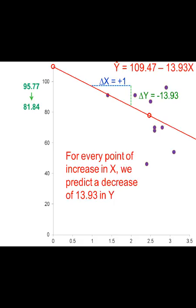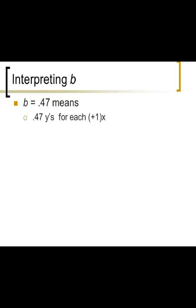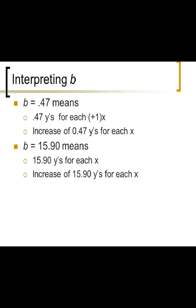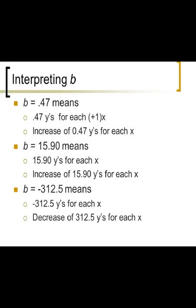That's an example of how to interpret things. For every one point increase in X, we predict a decrease in Y of 13.93 points. B equals 0.47 means there are 0.47 Y's for each X. B equals 15.90 means there's 15.90 Y's for each X. Negative 312.5 means a decrease of 312.5 in Y for each additional X. Now, this is just what the line does. This doesn't mean that's what the data really does. This is just our model. The model isn't reality. The model is something that we hope approximates reality.